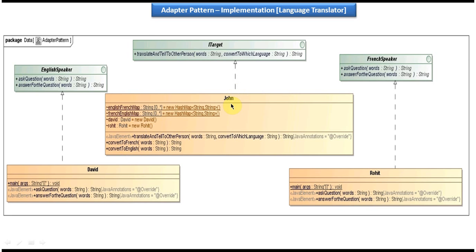John is a two-way communicator. He can understand English and convert English to French and talk to Rohit. Same way, he can get information from Rohit in French, convert French to English and talk to David. You can see instances of both David and Rohit in John. There are also two maps — one to maintain an English-to-French map and another to maintain a French-to-English map. I will show the code in Eclipse so that you will understand more about this.